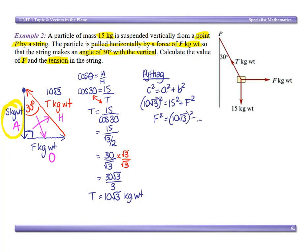10 root 3 all squared: 10 squared is 100, root 3 squared is 3, 100 times 3 is 300. Minus 15 squared is 225. So that gives us 75.